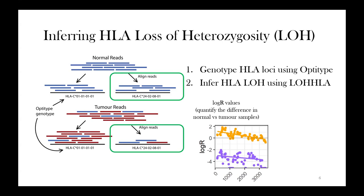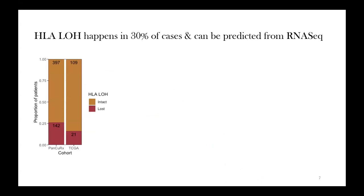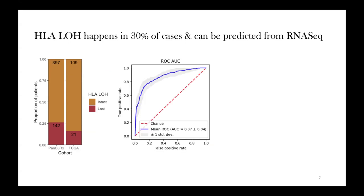I've done this for about 600 patients from both the PanQRX cohort here in Toronto and TCGA. Overall the proportion of HLA-LOH is around 26%, but when I account for tumor purity as a confounding factor, it rises to closer to 30% — so this happens in about 30% of pancreatic cancer patients. Because we have matched RNA samples from all of these patients, I've also built classifiers to identify these events from the transcriptome. When I do this on our PanQRX cohort, this works really well, with a high AUC on the ROC curve.